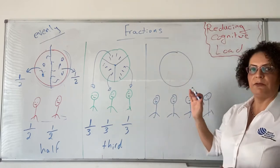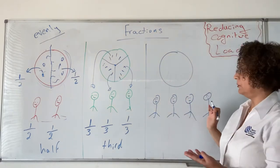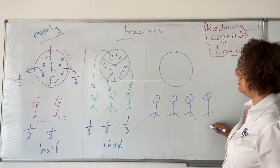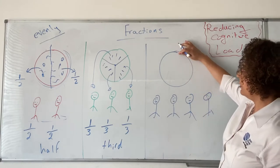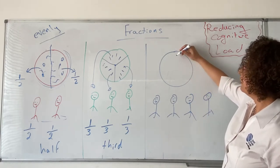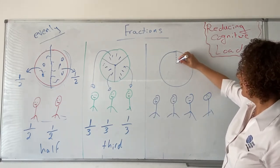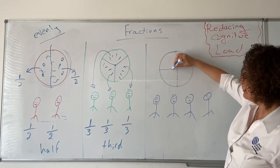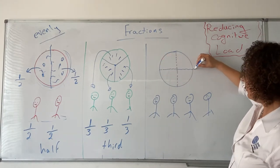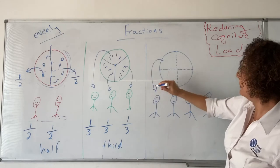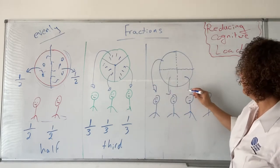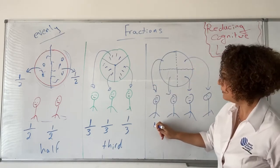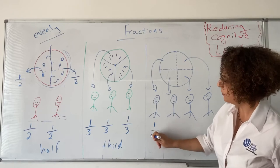Now if we have four people to share with — four people sharing one pizza. We're going to cut it into half and then half again. So each person is getting one out of four. One pizza, four people.